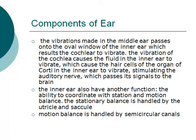The vibrations made in the middle ear pass on to the oval window of the inner ear, which causes the cochlea to vibrate. The vibration of the cochlea causes the fluid in the inner ear to vibrate, which causes the hair cells of the organ of Corti in the inner ear to vibrate, stimulating the auditory nerve, which passes its signal to the brain.